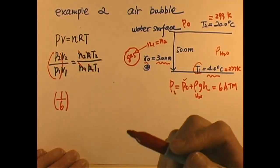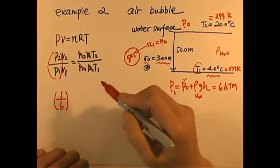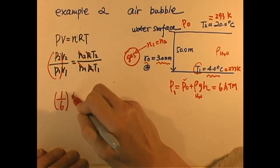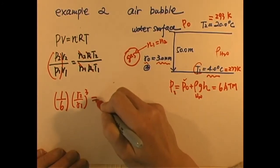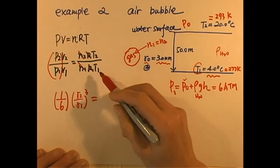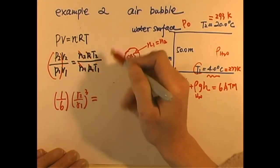Volume. Well, if the bubble is, let's say, close to a sphere, then the volume is proportional to the R radius cubed. So, V2 over V1 actually is R2 over R1 cubed. And then temperature, be very careful.